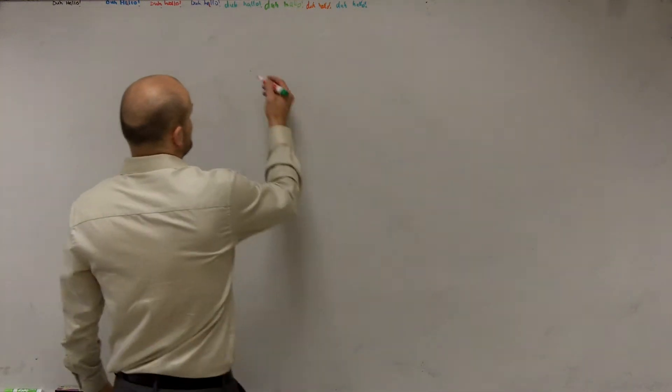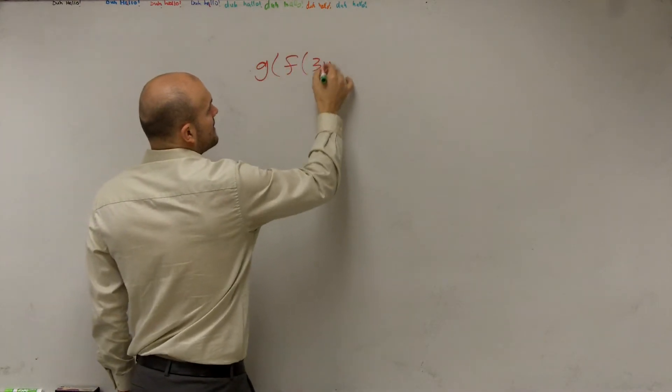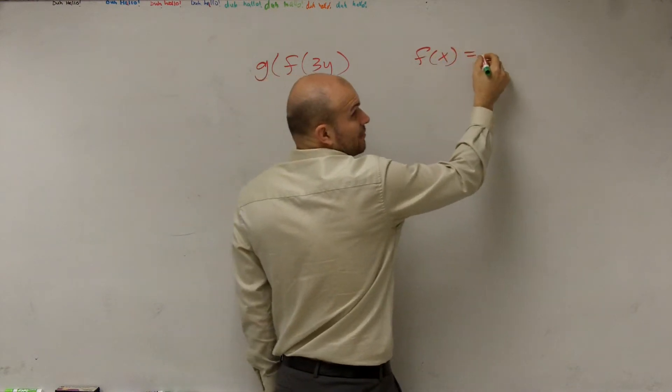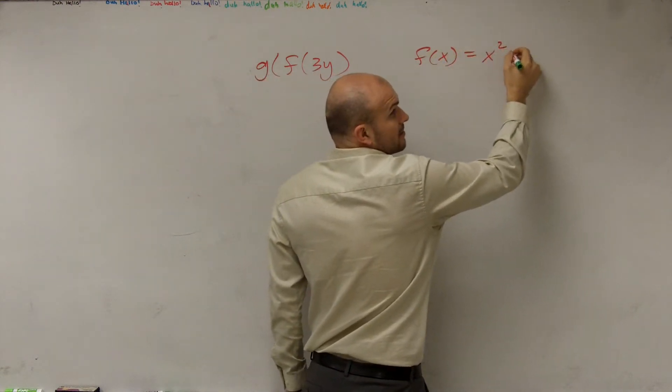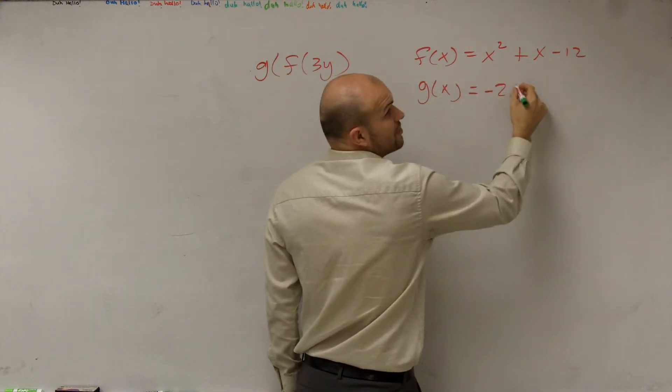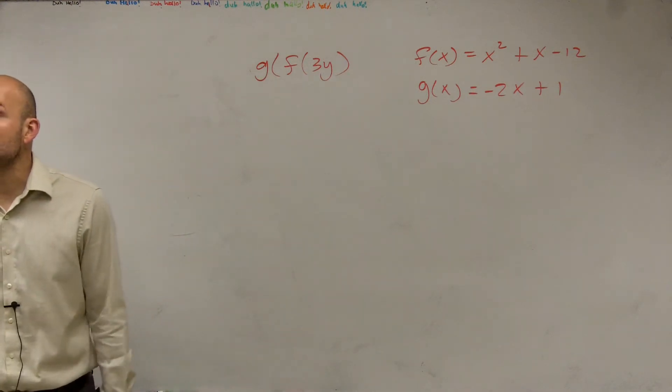So, let's go through this. If I have g of f of 3y, and I tell you that f of x equals x squared plus x minus 12, and g of x equals negative 2x plus 1.